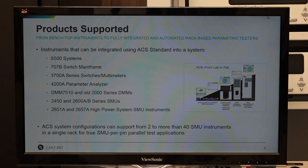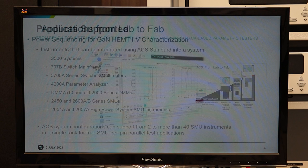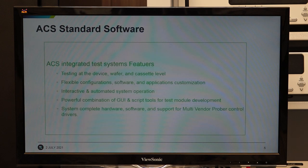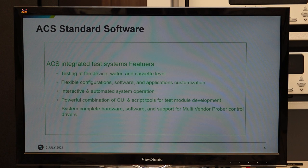ACS software becomes very critical when there is a lot of data handling and report generation required. You can do all the applications similar to what is done on the 4200; the user interface is more or less the same, only using a different environment. Built-in measurement routines exist for testing gallium nitride devices or HEMT IV characterization. Powerful combinations of GUI and script tools for test module development increase the speed with which users get test results and increase throughput.